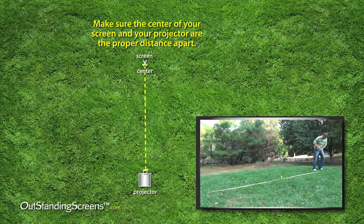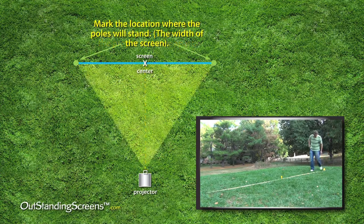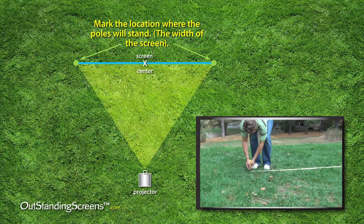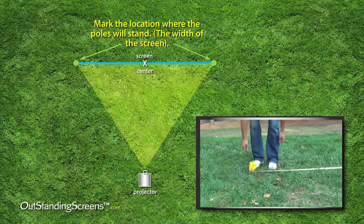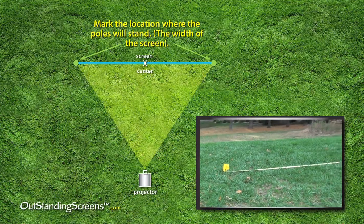You've marked where you want the center of the screen to be, based on your projector's specifications. Next, measure out 8 feet in both directions and mark the endpoints of your 16-foot wide screen. Notice the green dots on the illustration. This is where you plan to place the feet, or ends, of your screen.